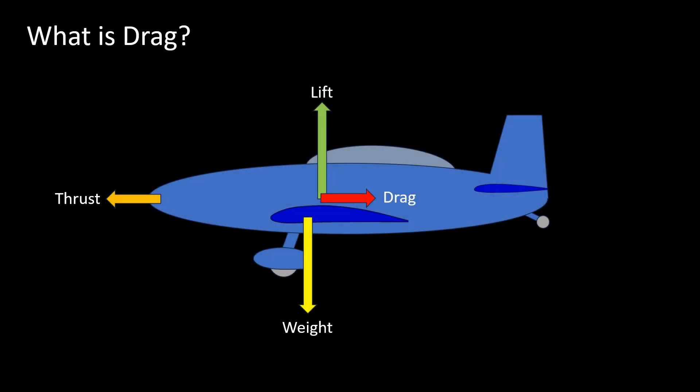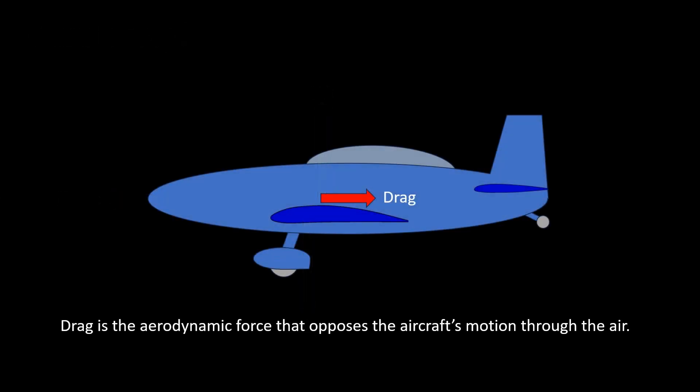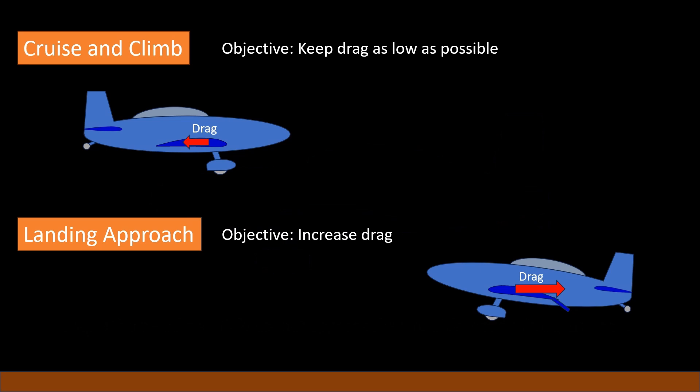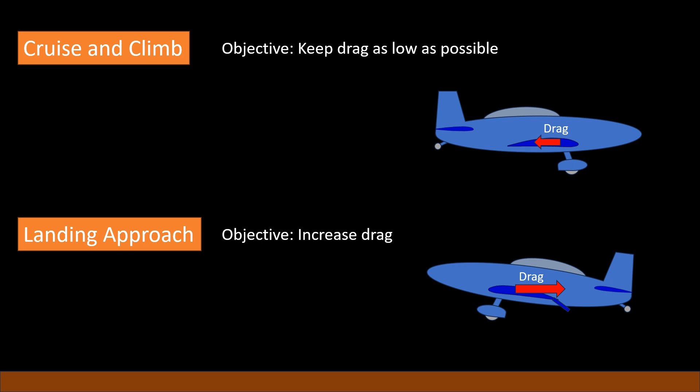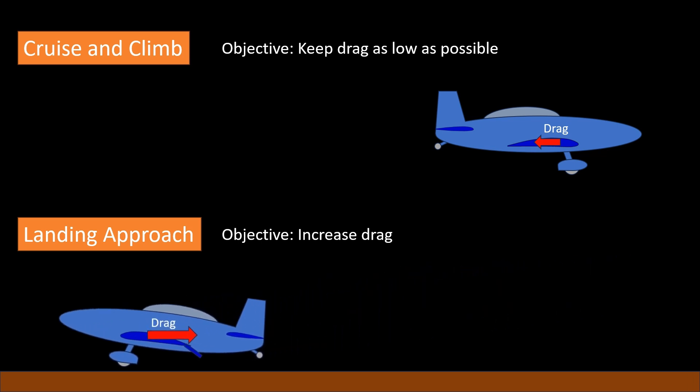Drag is the aerodynamic force that opposes the aircraft's motion through the air. As far as aircraft design is concerned, the primary objective is usually to minimize drag. In spite of the desire to keep drag as low as possible, we may want to control it. For example, during cruise we want the drag to be as low as possible, but during approach for landing, a higher drag value helps slow down the aircraft.